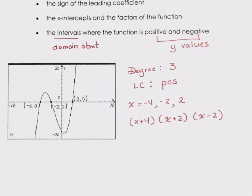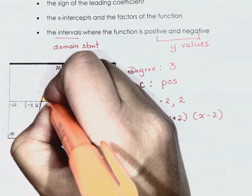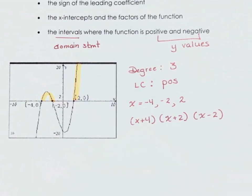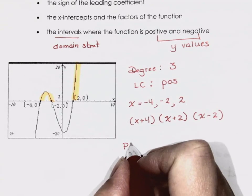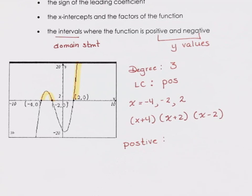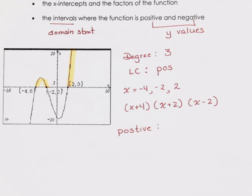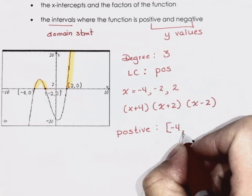We're going to do interval notation — domain statements about where the y-values are positive or negative. Where are the y-values positive? I'll highlight them. Zero is always included in the positive. So we say the positive interval starts at the furthest left positive point: negative 4, inclusive, to negative 2, inclusive. Then also positive from 2 onwards.